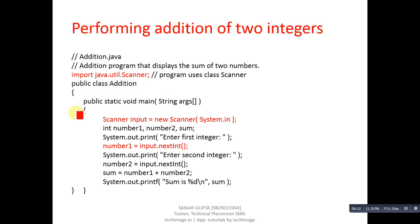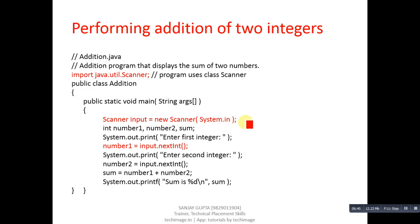We have 'public class addition' with the main function defined inside: public static void main(String args[]). Scanner is the class, input is the object. To allocate memory to the input object we use the 'new' operator followed by the class name Scanner, then System.in — which means we receive input from the console. System.in is for reading input from console and System.out is for writing to the console. In Java we must use the new operator every time we create an object of any class.